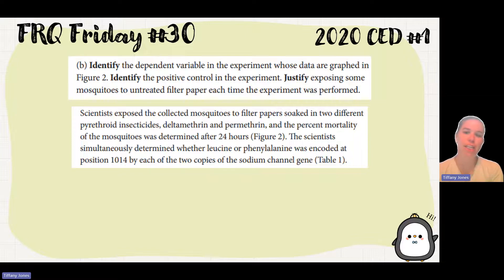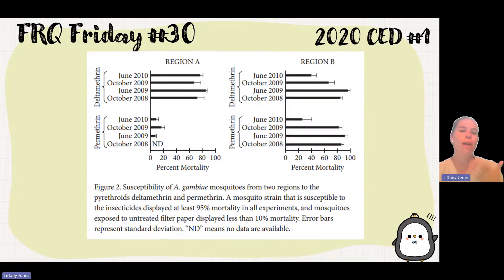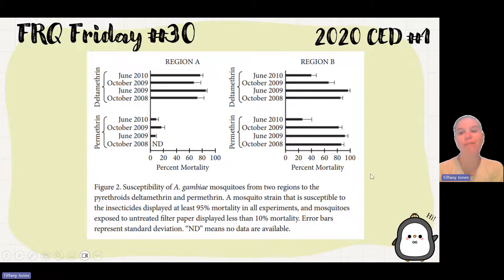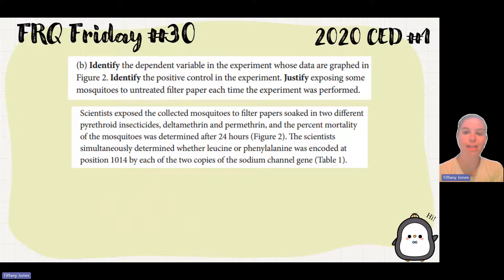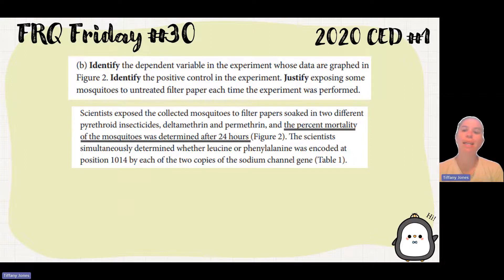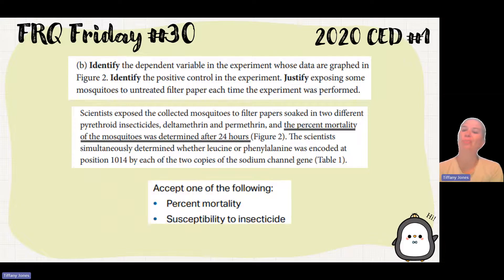Part B asks us to identify the dependent variable in the experiment whose data was graphed in figure two. Looking at figure two, you've got time on your y-axis and percent mortality on your x-axis. Students traditionally just look at the y-axis, so pay attention to the prompt. The prompt tells us that percent mortality was determined after 24 hours — that's the collected data, dependent on the changes in those insecticides. So the dependent variable is the percent mortality, or how susceptible the mosquitoes are to the insecticide.